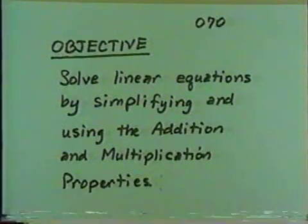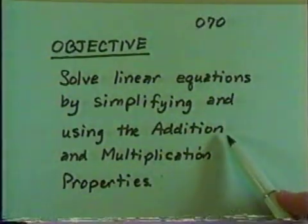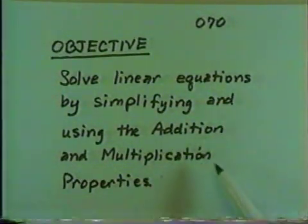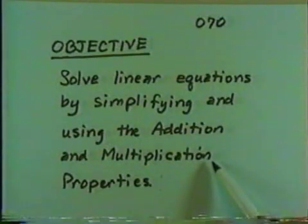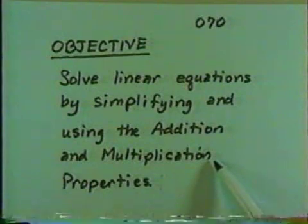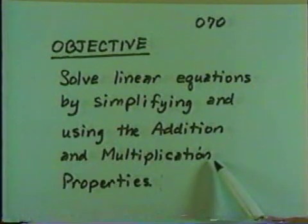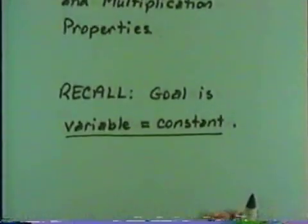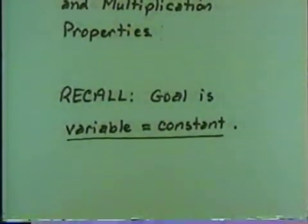Remember that the addition property says that we can add the same thing to both sides of an equation without changing its solution. The multiplication property says that we can multiply both sides of an equation by the same non-zero number without changing its solution. Recall that our goal is variable equals constant. We're trying to get the variable by itself on one side of the equation with a constant on the other side.